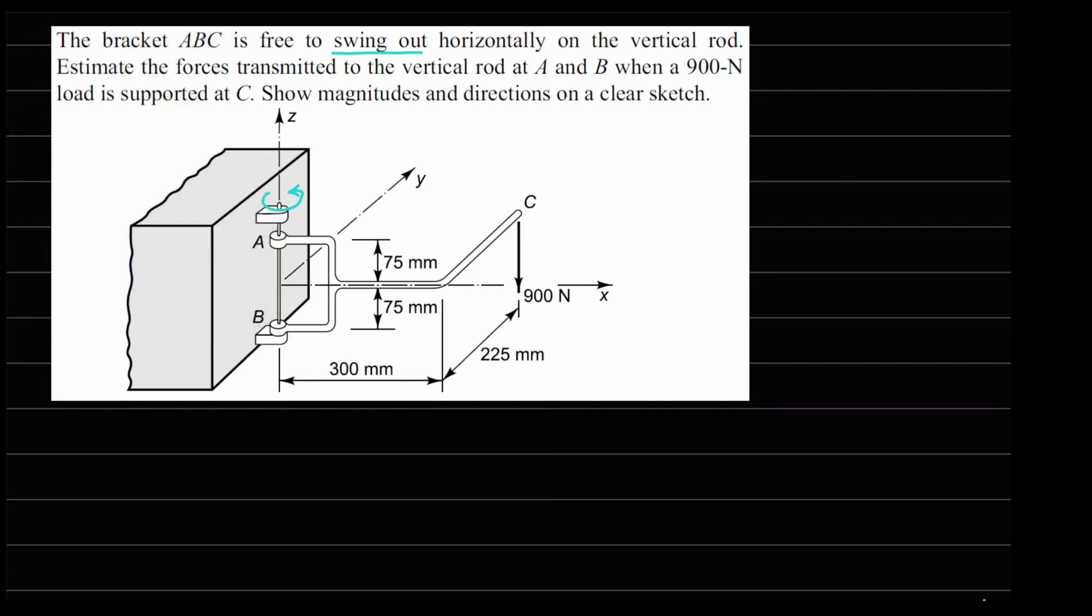Since both point A and B, if you consider this part of the structure, this is not allowed to move in x direction or y direction. This will have a reaction coming in the x direction on both points. Let us call this FAX and this one as FBX. Similarly in the y direction also this will not be allowed to move. So we are going to have these reactions which are FAY and FBY.